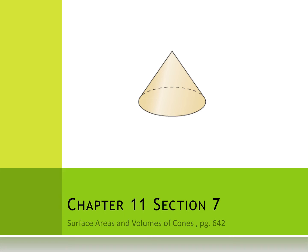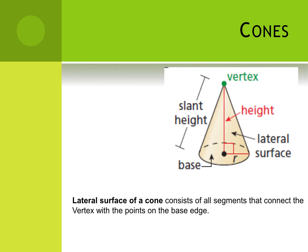Today we're going to learn how to find the surface area and volume of cones. First, we'll identify the different parts of the cone. Just like with the pyramid, we've got two different heights: the actual height of the cone, used in the volume formula, and the slant height, used in the surface area formula. The base shape on a cone is always a circle, so the base area will be pi r squared. The lateral area is developed from the area of the sector equation.